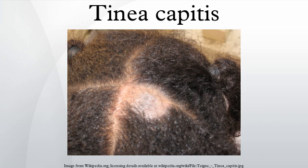In microsporosis, the lesion is a small red papule around a hair shaft that later becomes scaly. Eventually the hairs break off 1–3 millimeters above the scalp. This disease used to be caused primarily by Microsporum audouinii, but in Europe, M. canis is more frequently the causative fungus. The source of this fungus is typically sick cats and kittens.